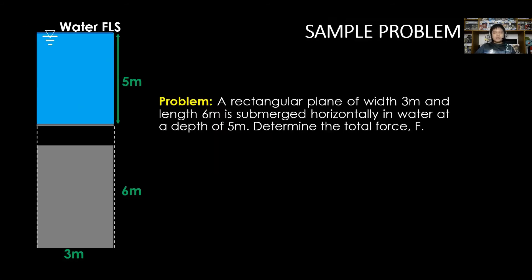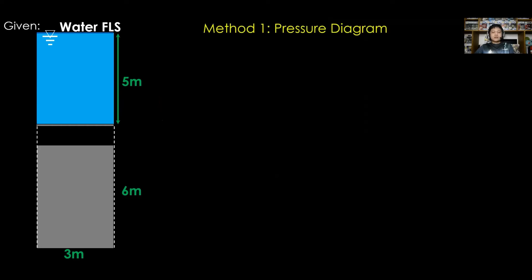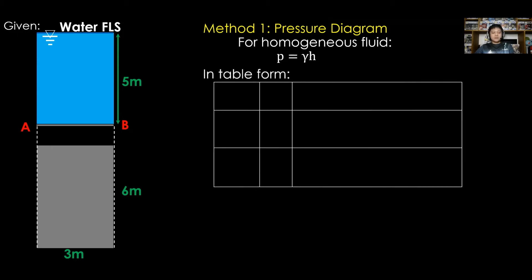For our sample problem, a rectangular plane of width 3 meters and length 6 meters is submerged horizontally in water at a depth of 5 meters. Determine the total force F. For method number one, the pressure diagram: assign points A and B at extreme ends. For homogeneous fluid, use P equal to gamma times H.